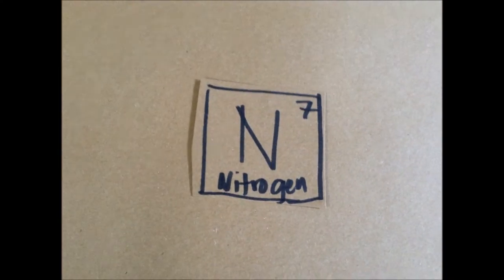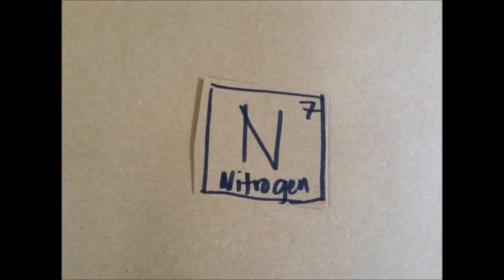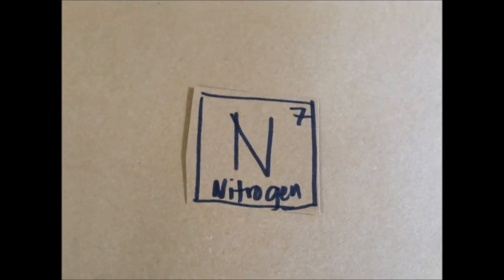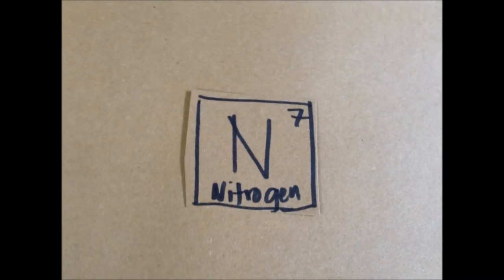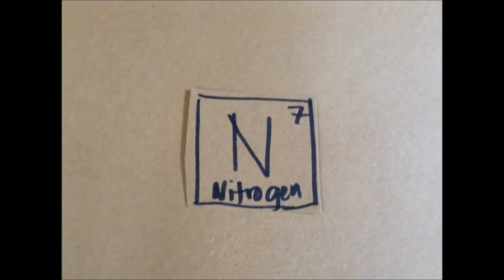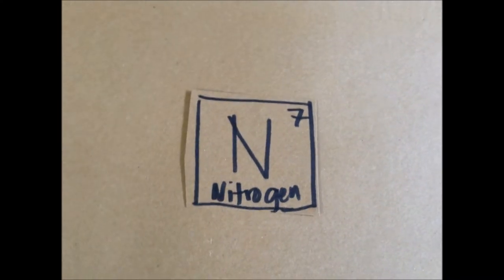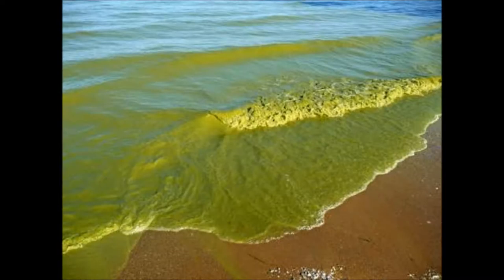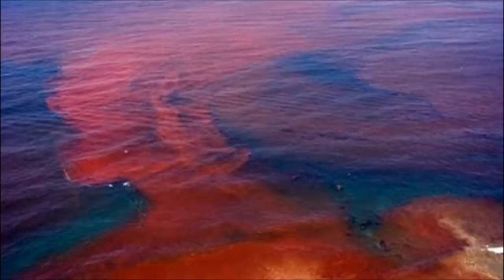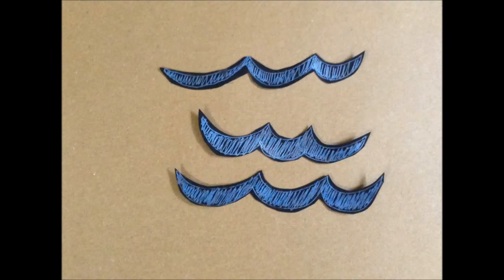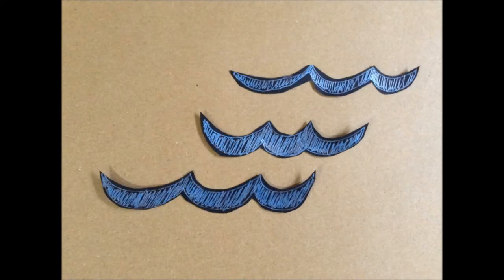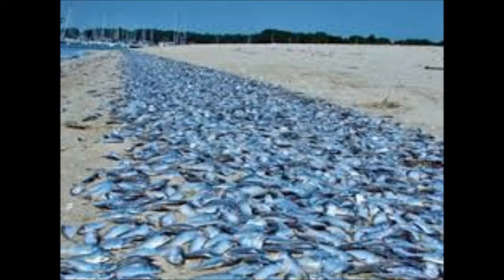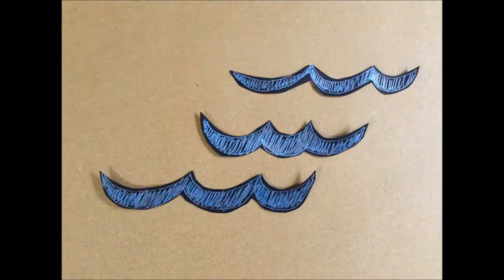Nitrogen is often the limiting factor in marine systems. The addition of nitrogen can cause algal blooms and red tides, which may lower the oxygen level of the water to the point where it kills marine animals.